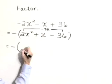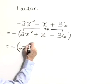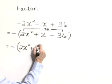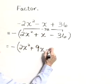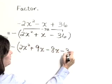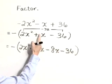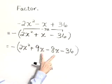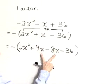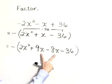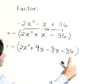So let's rewrite our trinomial as 2x squared plus 9x minus 8x minus 36. Notice that we've rewritten the term 1x as 9x minus 8x, expanding it. Now we're going to factor by grouping.